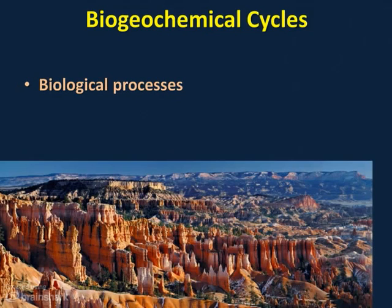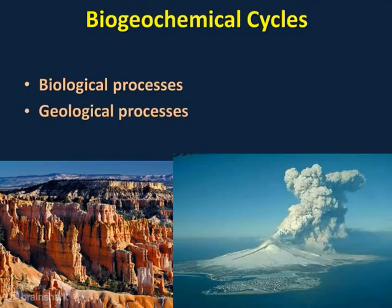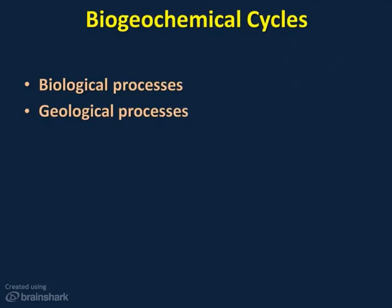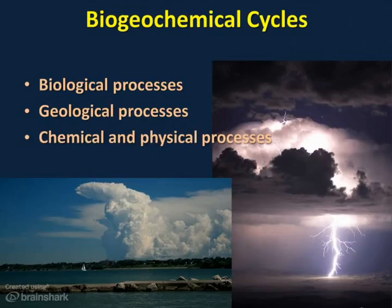Geological processes include things like volcanic eruptions, weathering, erosion, and movements within and below the surface of the earth — we see a picture of Bryce Canyon and the island of Surtsey erupting as examples. The formation of clouds, precipitation, the flow of running water, and the action of lightning are examples of chemical and physical processes. So there's our bio-geochemical, and we're going to be talking about all three of those as we go through this section.